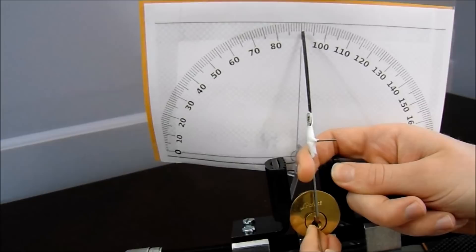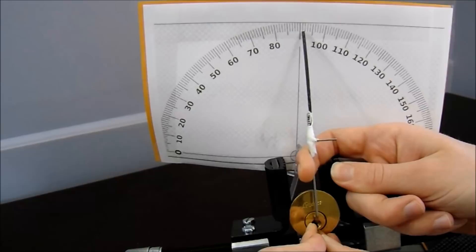One, two, three, four, binding. Got a good click. And now we are in a false set.